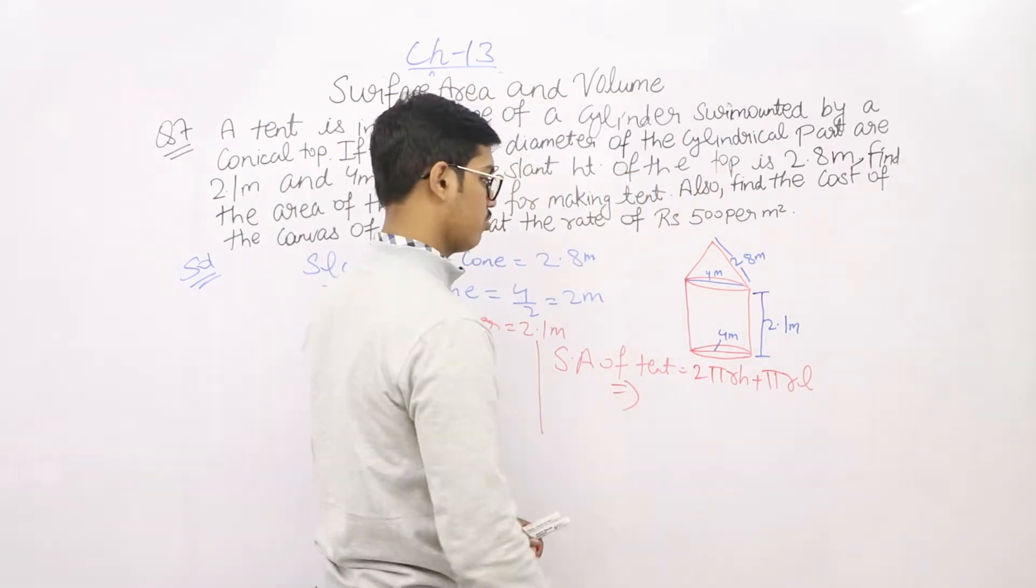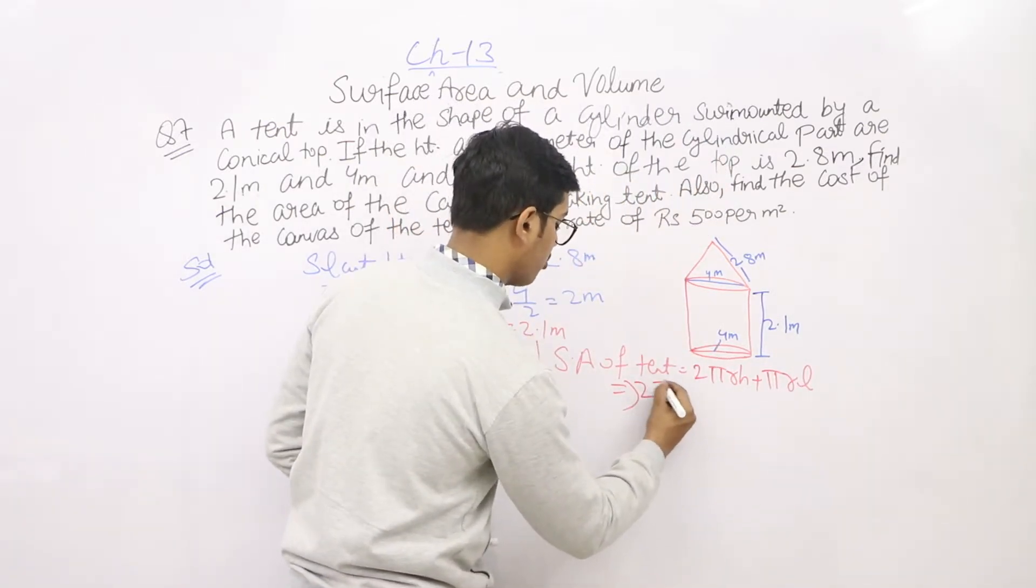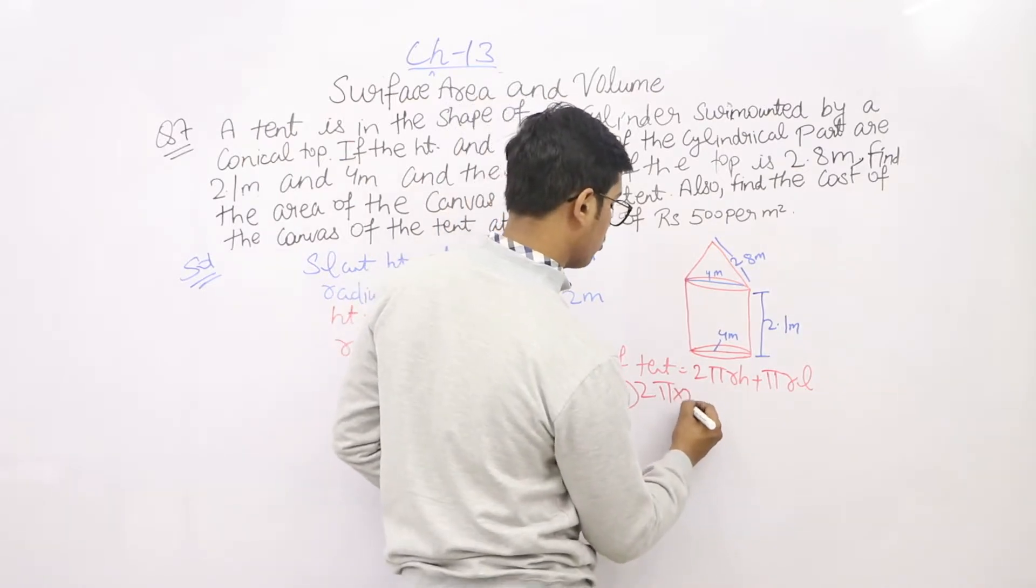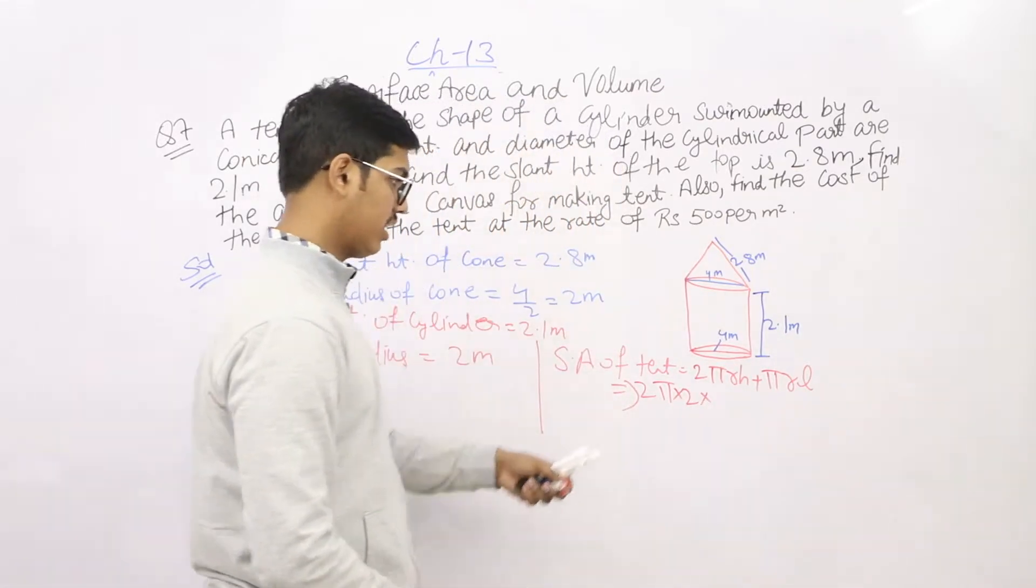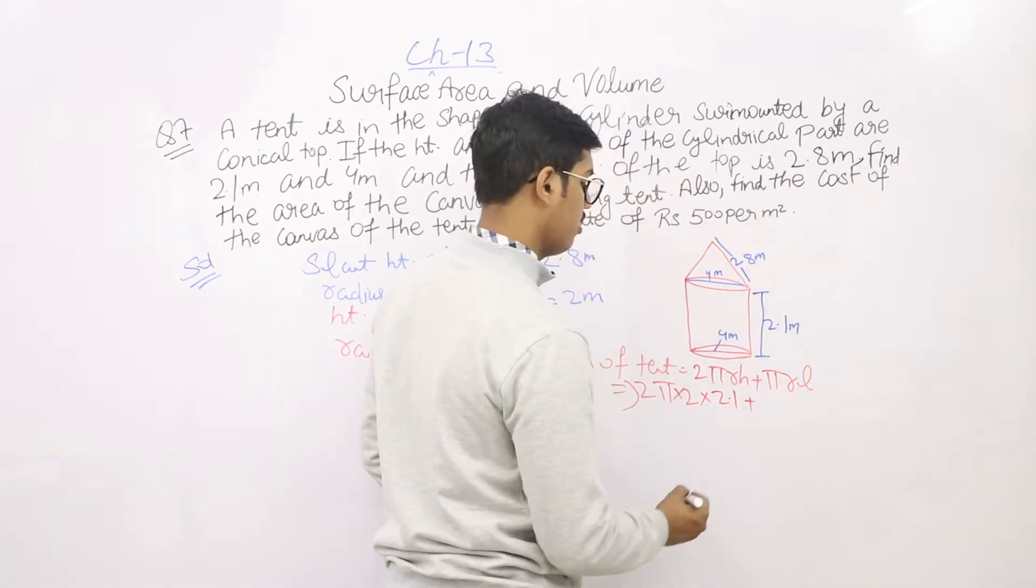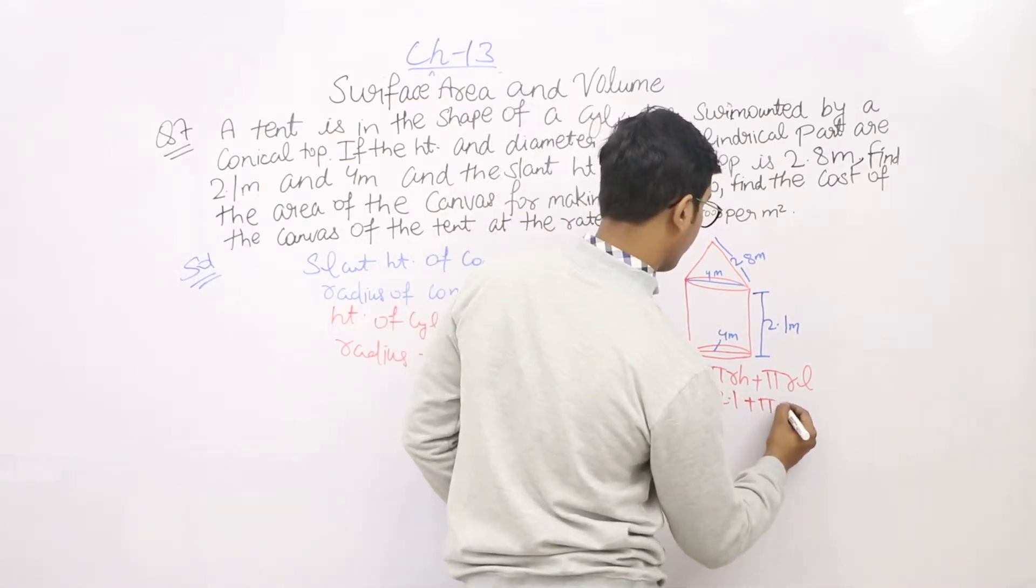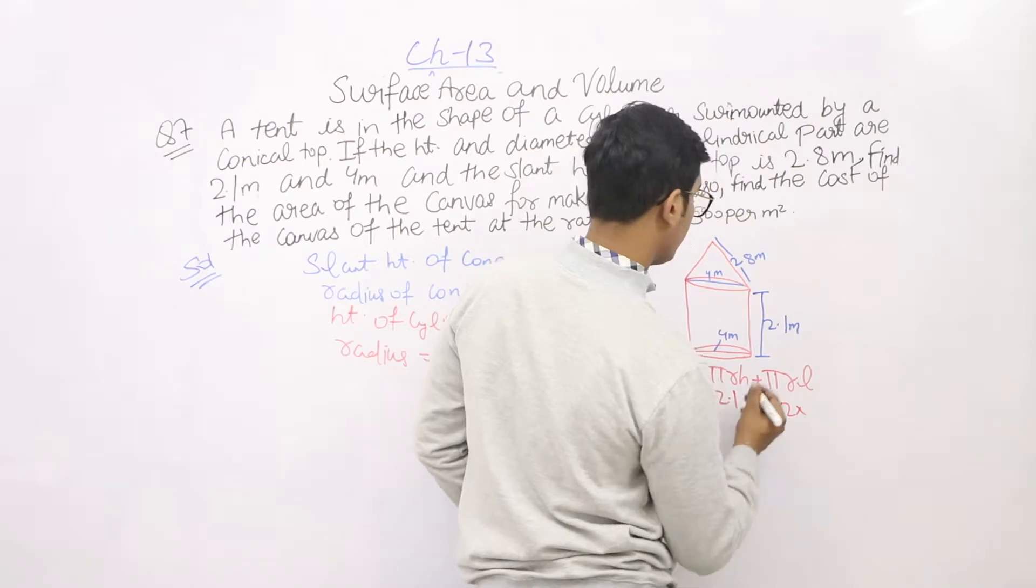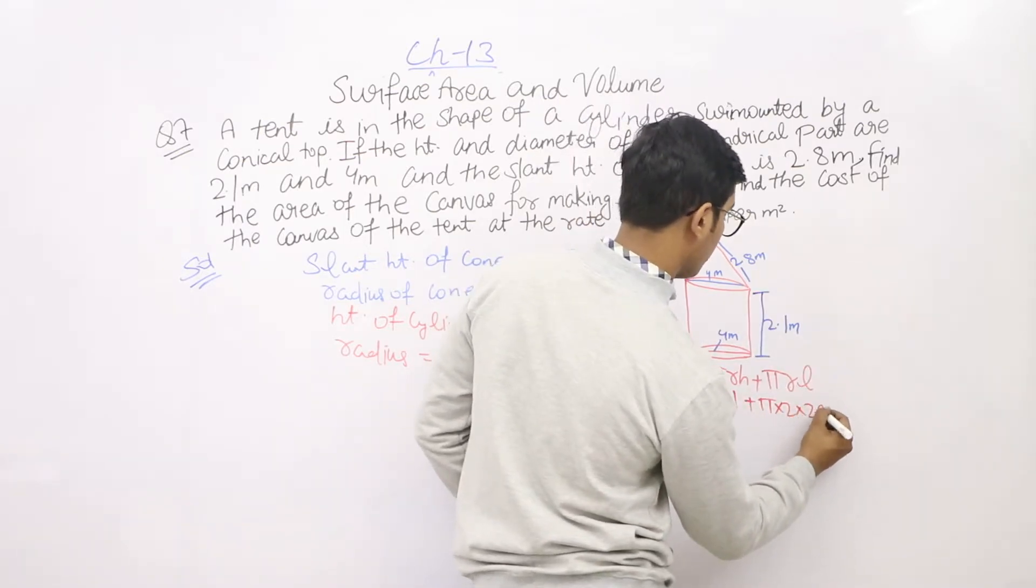Putting values: 2π, r is 2, height of cylinder is 2.1, plus π, r is 2, and the slant height is 2.8.